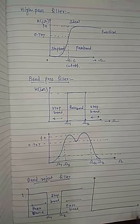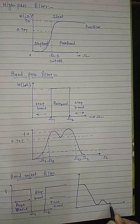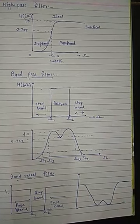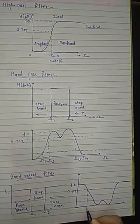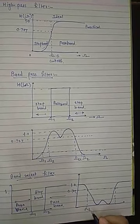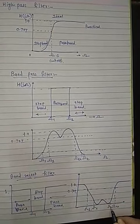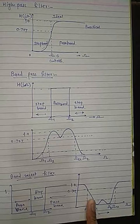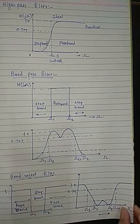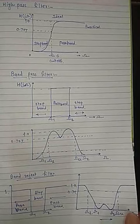The practical frequency response for the band reject filter gradually decreases and then increases again. The magnitude is 1.0 in the pass band and 0.707 at the lower and upper cutoff frequencies, Ω_1 and Ω_2 respectively. We have now seen the low pass filter, high pass filter, band pass filter, and band reject filter, observing both the ideal and practical magnitude responses for each.